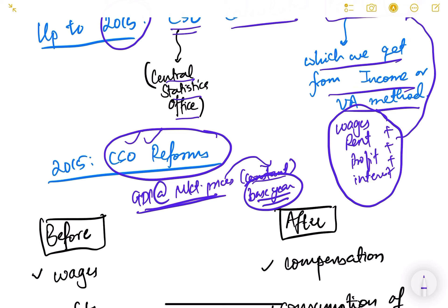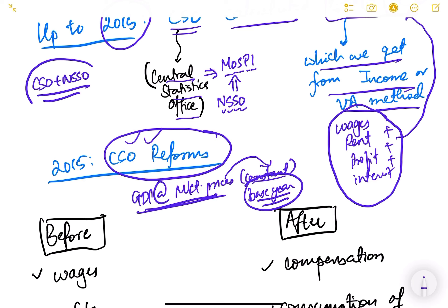The Central Statistics Office is a part of MOSPI — Ministry of Statistics and Programme Implementation. NSSO, the National Sample Survey Office, is also a part of MOSPI. In 2018, CSO and NSSO were combined, and one organization called NSO — National Statistics Office — was formed. So now these two are merged into just one organization, NSO.